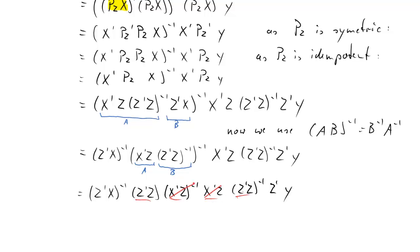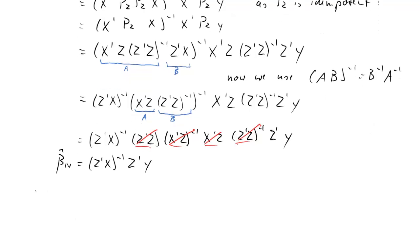But now the magic happens. This cancels out. This cancels out. So what we are left with is (Z'X)^(-1)Z'y. Wonderful. And of course this is just the definition of our IV estimator. As you can find it in definitions in the book and in the lecture.